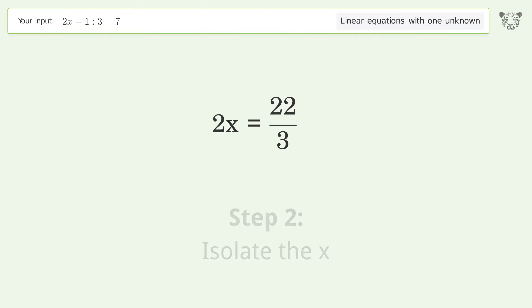Isolate the x. Divide both sides by 2. Simplify the fraction. Simplify the arithmetic.